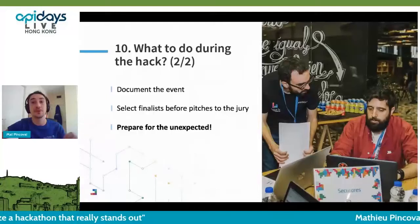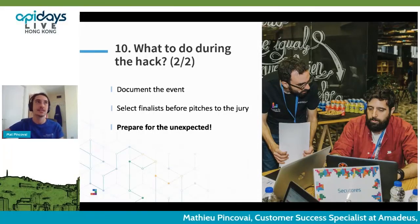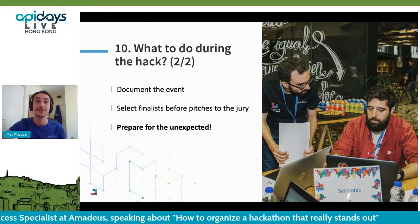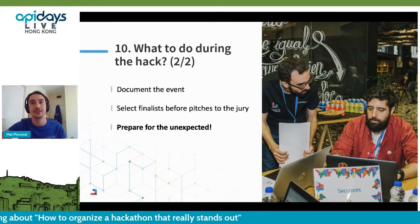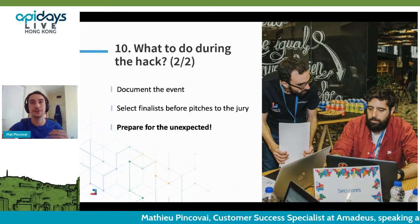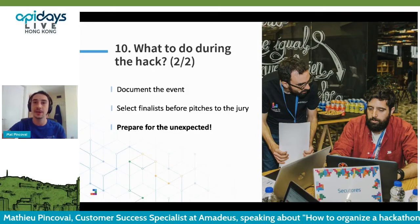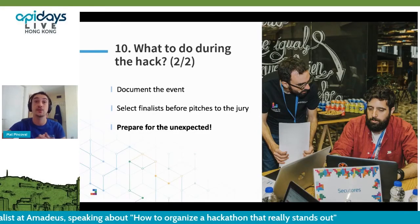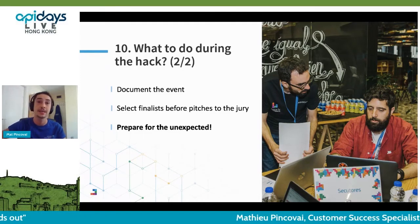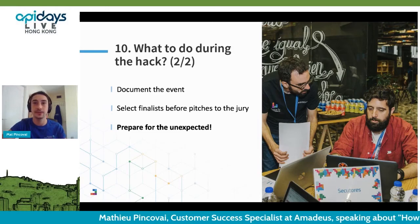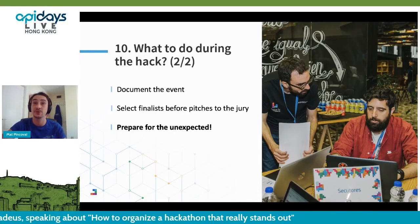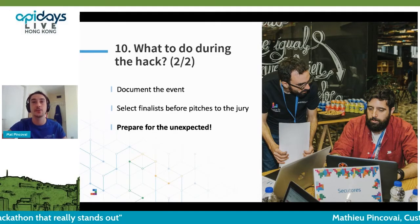Don't forget to take notes — hackathons can be very tiring and it's easy to forget things, especially if everyone hacks through the night. You're not going to remember at 4 a.m. that someone made a comment on your API reference documentation. Also make room in your agenda to pick the finalists who will pitch to the jury. If you've set clear criteria from the beginning, this should be straightforward — you can disregard teams that haven't finished their prototypes or didn't address the challenge. Be very clear on how you are going to pick the finalists and the winner, and don't leave room for interpretation.